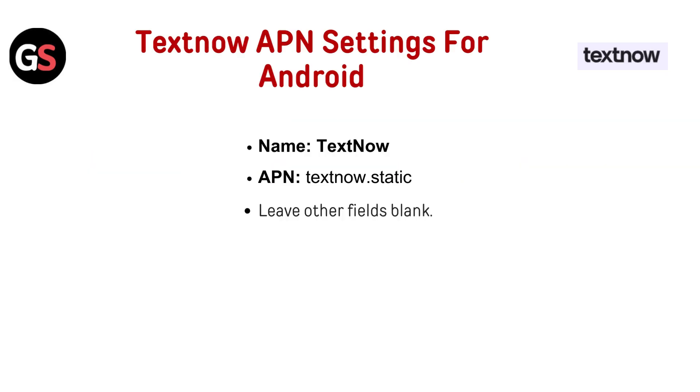TextNow APN settings for Android. Name: TextNow. APN: TextNow.Static. Leave other fields blank.